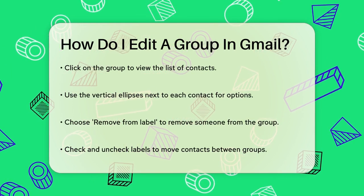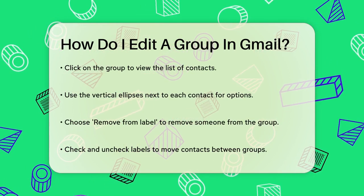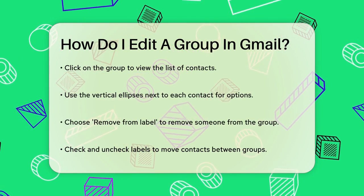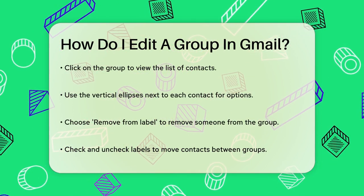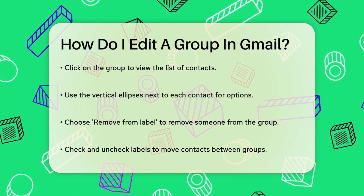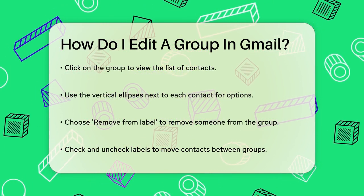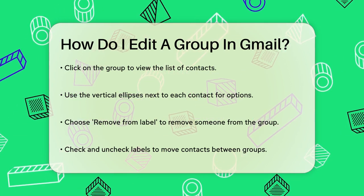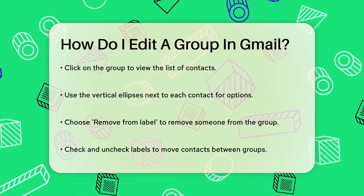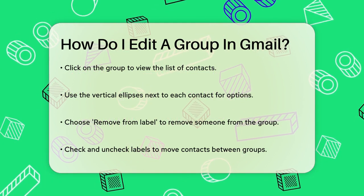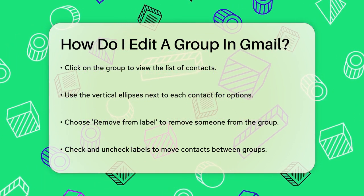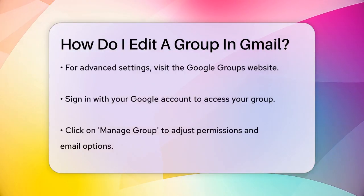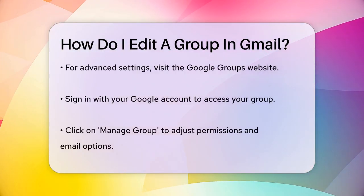If you want to delete the group entirely, you can click on the trashcan icon next to the pencil. If you need to add or remove people from the group, click on the group to see the list of contacts. Then click on the vertical ellipses next to each contact to get a list of options. Here, you can choose to remove from label to take someone out of the group, or you can check and uncheck labels to move contacts between different groups.